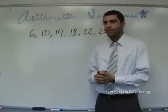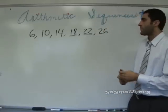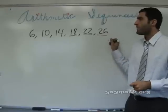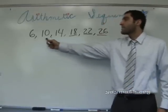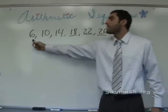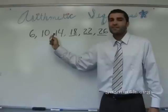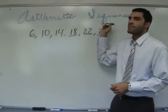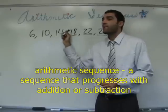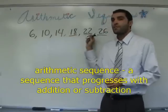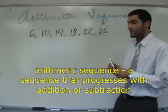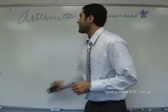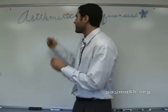Like they do code breaking — we're going to do the basis of code breaking. This simple example is basically saying that this is a sequence, and it progresses with addition or subtraction. That is what an arithmetic sequence is: a sequence that progresses with addition or subtraction.